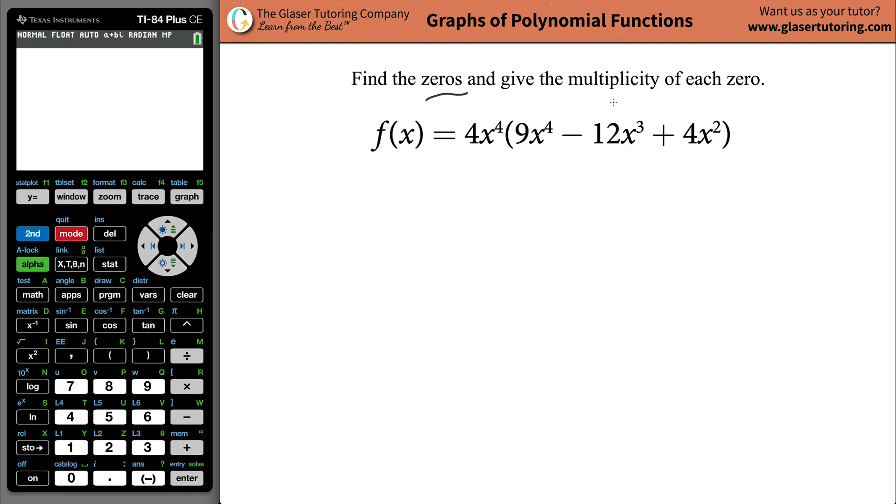Today I would like to teach you how to find the zeros and to give the multiplicity of each zero of the following function: 4x raised to the fourth, multiplied by 9x raised to the fourth, minus 12x raised to the third, plus 4x raised to the second.